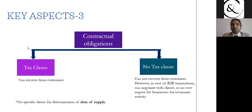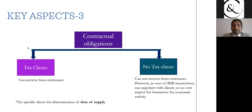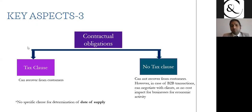If it is B2C, you cannot recover it. If it is B2B, you have an option to negotiate with your clients. I also always recommend — especially for contracting — that you include a specific clause for the determination of date of supply, so you can figure out your tax obligation and in which tax period you are supposed to pay tax. I'm pretty sure if you check your existing contracts, you will find this clause missing.